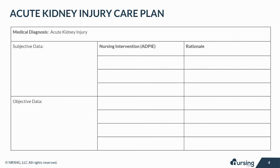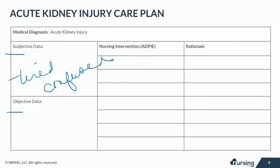Let's take a look at some of the subjective and objective data that your patient with acute kidney injury may present with. Subjective data are things based on your patient's opinions or feelings, like feeling tired, confused, being nauseous, having pain or pressure in the chest, and shortness of breath.